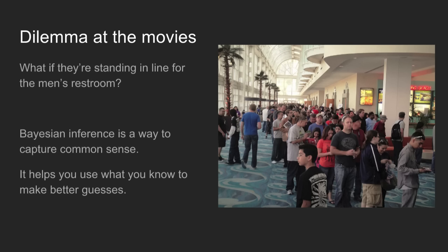Now imagine instead that this person is standing in line for the men's restroom. Knowing this extra piece of information, you might make a different guess. Bayesian inference is a way to capture this common sense knowledge about the situation and help you to make better guesses.